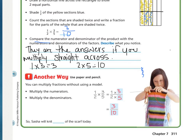In this case, you do not have to reduce or simplify. Three, right here, is a prime number. That means that you can only get by three by multiplying one and three, and three and ten have no common factors. So, therefore, our answer is that Sasha will knit three-tenths of the scarf today.